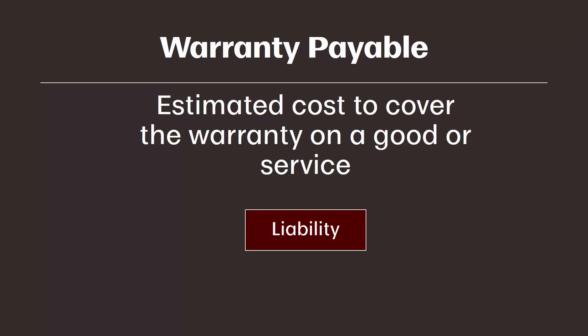First, let's walk through warranty payable. A company that provides customers a warranty would need to estimate the cost of any warranties they might have to honor that year. Let's use Chevy as an example. Each year, Chevy has to estimate the cost of parts and services for any vehicles they have to repair or replace that are under warranty. We call warranties a contingent liability, meaning whether or not we have to pay or incur a cost is contingent on something happening. In the example of a warranty, the something happening is our product breaking. So the company would need to estimate the cost of any warranties they would have to honor.